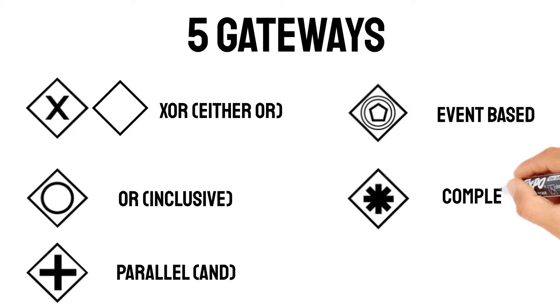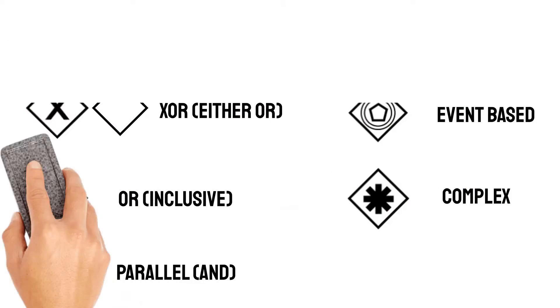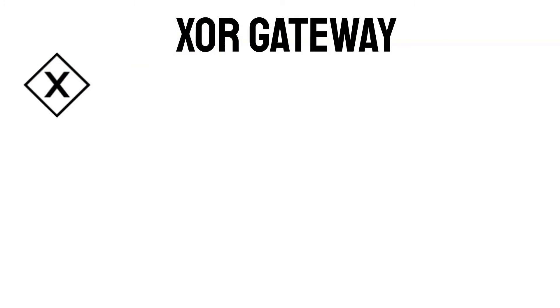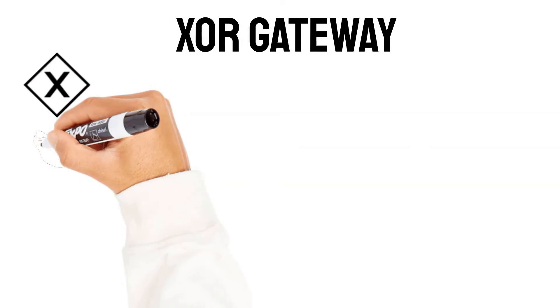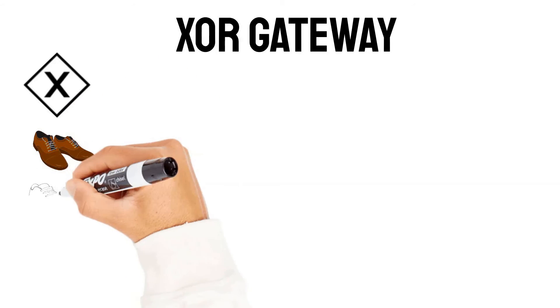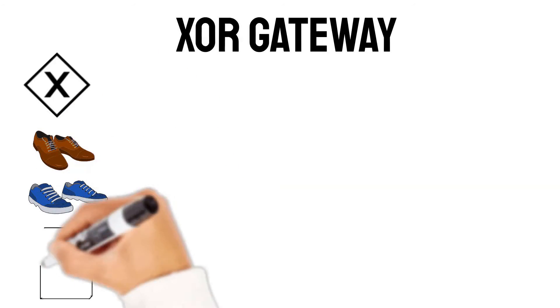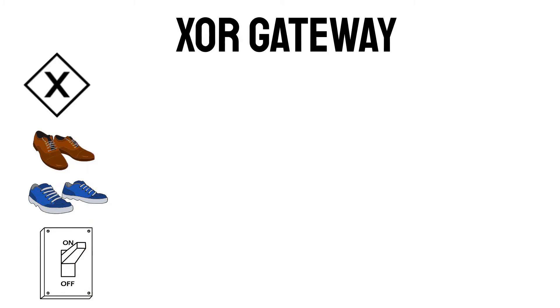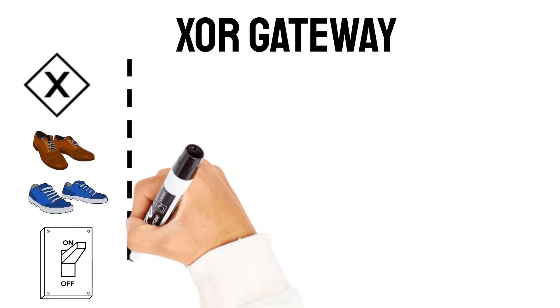Now let me demonstrate each of the BPMN gateways. The either-or gateway represents an either-or decision. We use either-ors very often in a day and it's pretty intuitive — shall I wear the brown shoes or the black ones today? Is the light switch on or off? You would always use the either-or gateway when you want to represent the decision that from here only one path is valid and all the others are not.